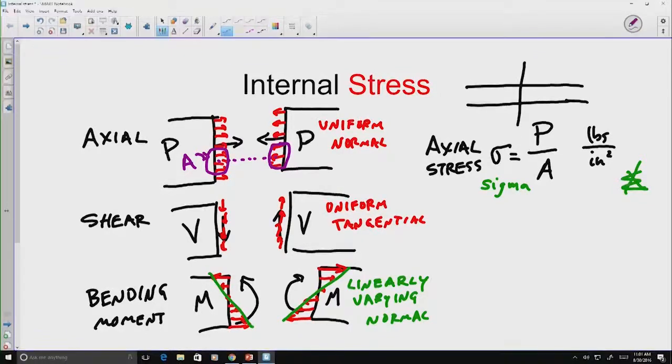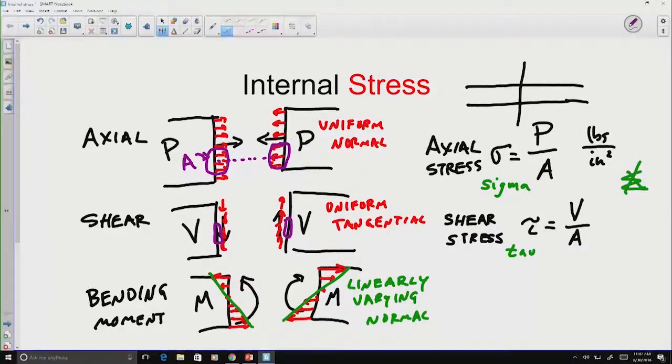For shear stress, we use a different letter. We use the Greek letter tau. But the relationship is very similar. Tau is related to the shear force as it's applied over an area. And notice that area, as in the case of the shear force, that area is parallel to the shear stress. This is going to be in pounds per inch squared or newtons per meter squared, units of force per unit area.